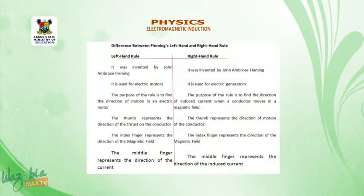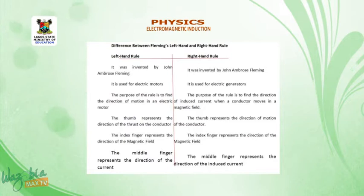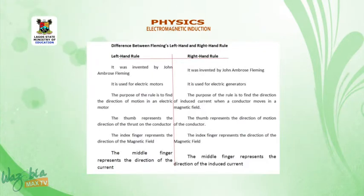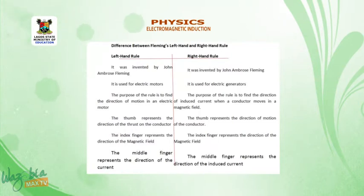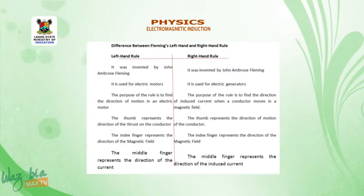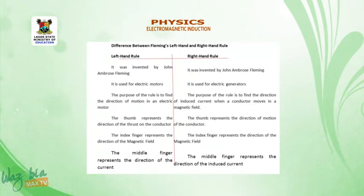Differences between Fleming's left hand and right hand rule. Left hand rule: it was invented by John Ambrose Fleming. Under the left hand rule, it is used for the electric motor. Under the right hand rule, it is used for the electric generator. The purpose of the left hand rule is to find the direction of motion in an electric motor. The purpose of the right hand rule is to find the direction of induced current when a conductor moves in a magnetic field.